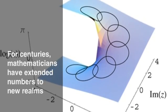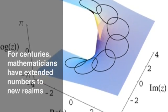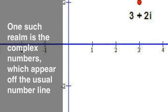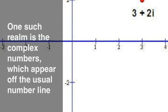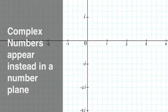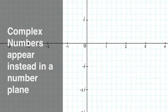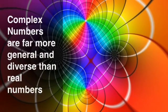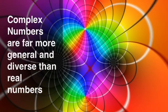For centuries, mathematicians have extended numbers to new realms. One such realm is the complex numbers, which appear off the usual number line. Complex numbers appear instead in a number plane. Complex numbers are far more general and diverse than real numbers.